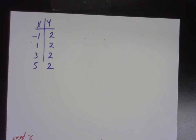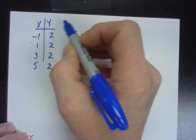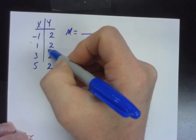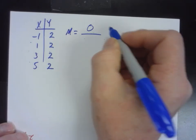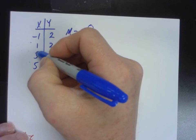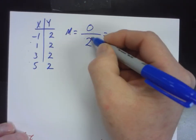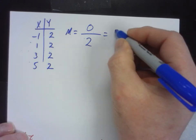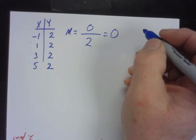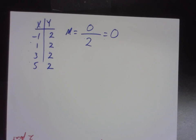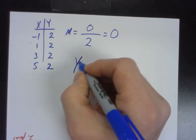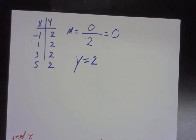You'll notice that the change in Y is 0. And the change in X is? Yeah. Although, it doesn't really matter. What's 0 divided by anything? It's 0. So, the slope of this line is 0. What do you think the equation of this line is? Y equals 2. Yeah. Y equals 2. Doesn't matter what X is, right? Y equals 2.